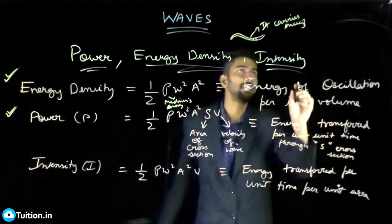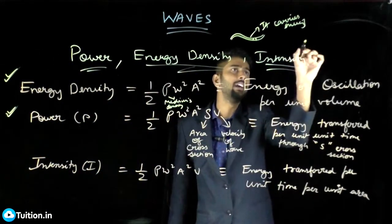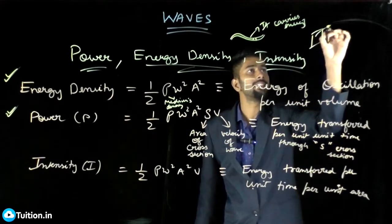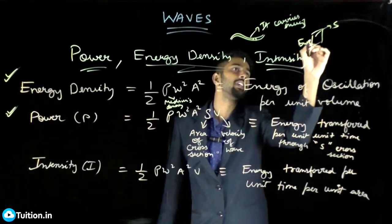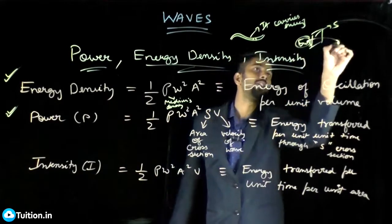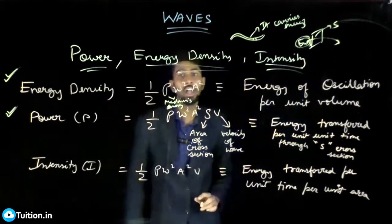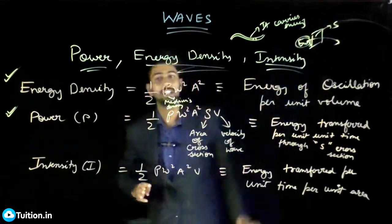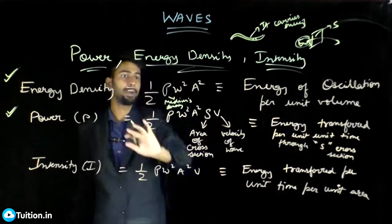If I see that this wave carries energy, if I take a cross sectional area S, I want to see how much energy got transferred from this side to that side through this cross sectional area. What was the energy that this wave transferred through this cross sectional area S? That is given by this formula.